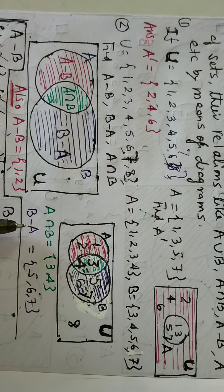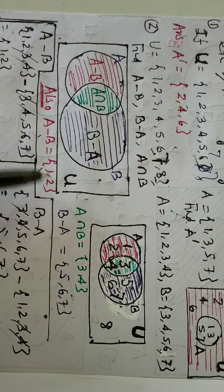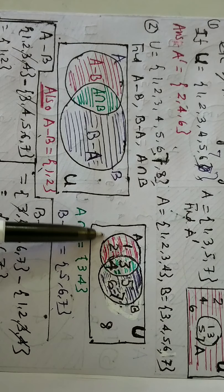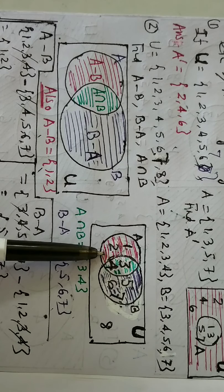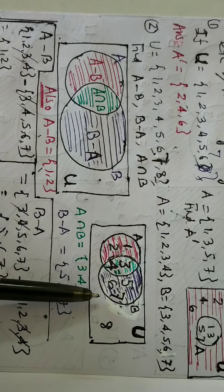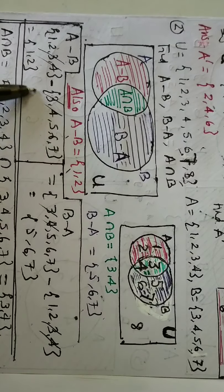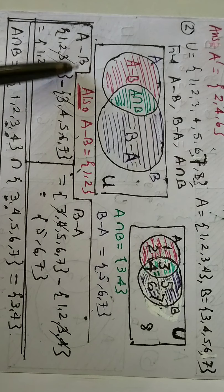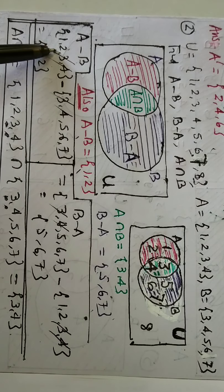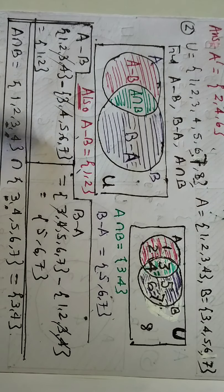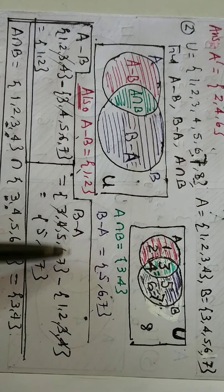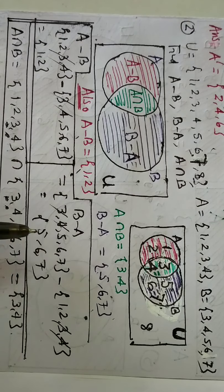Now you can write: A intersection B is {3, 4}. A minus B — the red portion — is {1, 2}. And B minus A is the black portion. You already know that for A minus B, write the value of A then B and cancel the common elements to get {1, 2}. For B minus A, write B then A and cancel the common elements.